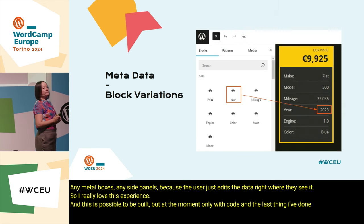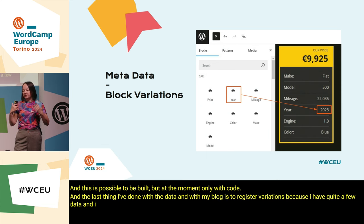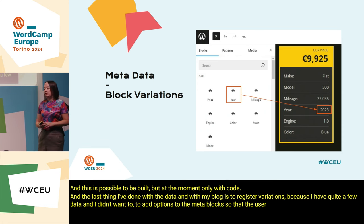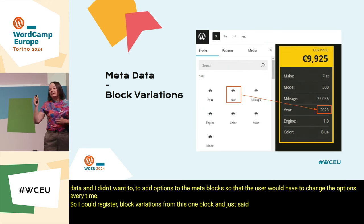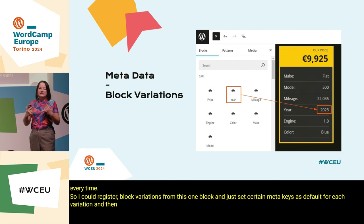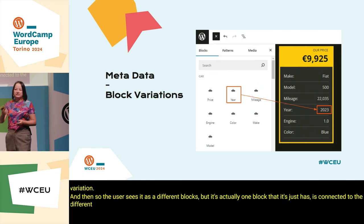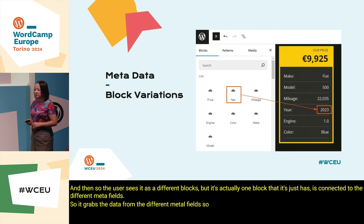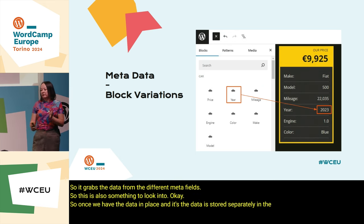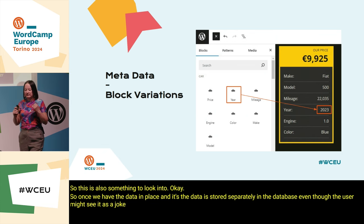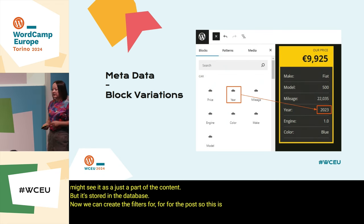To handle multiple data fields without cluttering the meta block with options, I registered block variations — setting certain meta keys as defaults for each variation. The user sees what appears to be different blocks, but it's actually one block connected to different meta fields that grab data from different places. So that's the data portion covered: data stored separately in the database even if the user sees it as part of the content, enabling proper filtering.